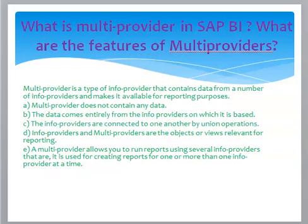What is a multi provider in SAP BI, and what are its features? A multi provider is a type of info provider that contains data from a number of info providers and makes it available for reporting purposes. A multi provider does not contain any data; the data comes entirely from the info providers on which it is based. The info providers are connected to one another by union operations.